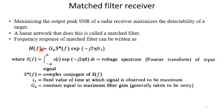H(f) equal to G_A S*(f) exponential minus j2πft_1 where S(f) is the integration over the entire time, s(t) exponential minus j2πft dt, that is the spectrum of the input signal, the Fourier transform. S*(f) is the complex conjugate of S(f).